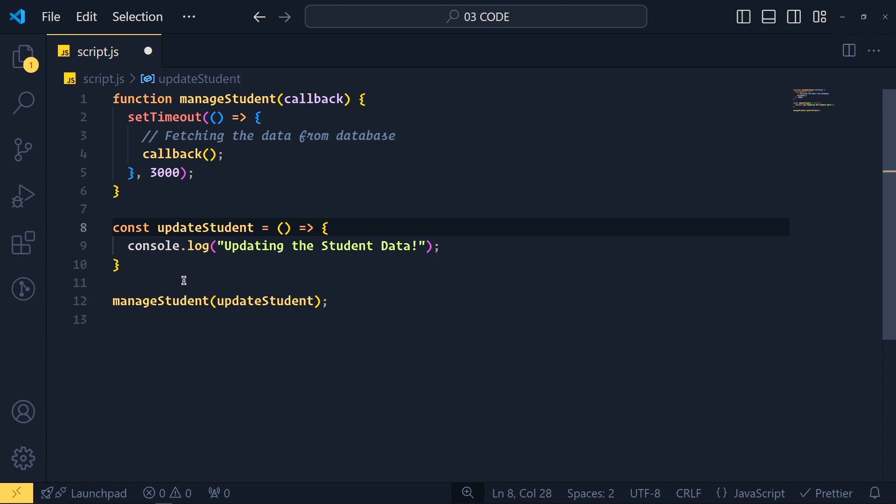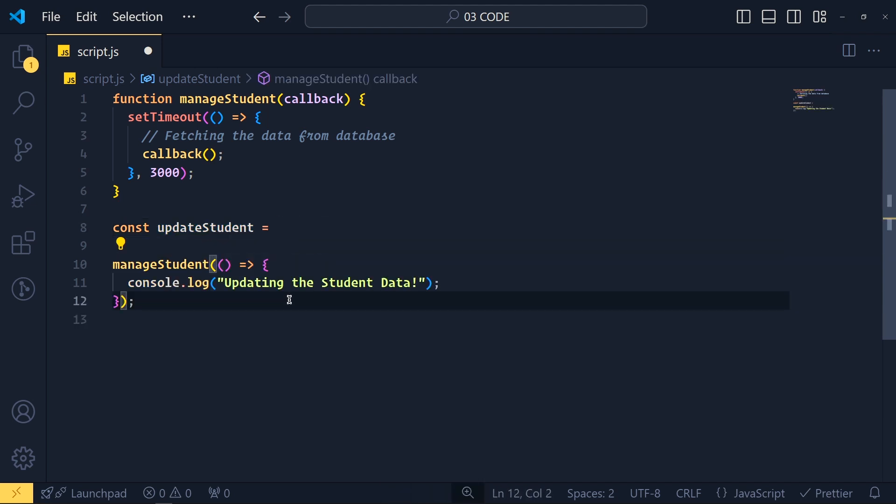Now here, we created this function separately and because of that, we have to give it a name. But we can simplify this code by directly passing this function here. So at the place of this function name, we can cut and paste this piece of code here. And we simply remove this code. We don't need it.